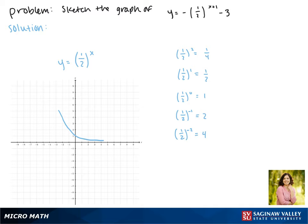We'll start by reflecting this function. The negative out front reflects it across the x-axis, and now it passes through (0, -1).